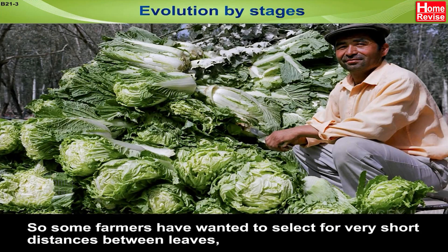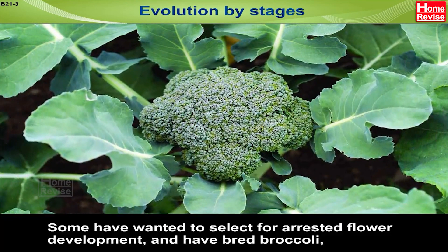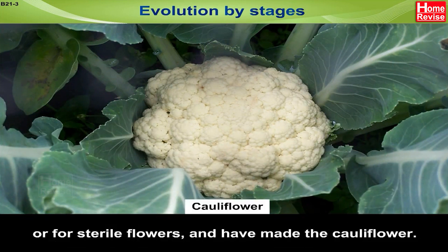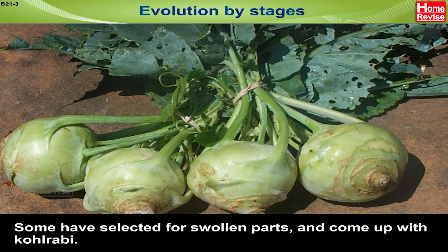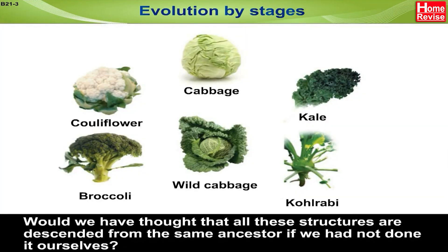Some farmers selected for very short distances between leaves and bred the cabbage we eat. Some wanted arrested flower development and bred broccoli, or sterile flowers and made cauliflower. Some selected for swollen parts and came up with kohlrabi. Some selected for slightly larger leaves and came up with the leafy vegetable kale. Would we have thought that all these structures are descended from the same ancestor if we had not done it ourselves?